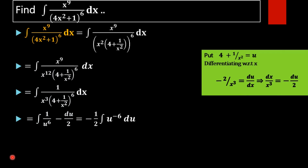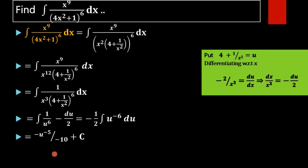On integrating, we get minus 1 by 2 into the integral of u raised to minus 6. Integrating gives u raised to (minus 6 plus 1) divided by (minus 6 plus 1), which is u raised to minus 5 divided by minus 5. So minus 5 times 2 gives minus 10, and we get minus u raised to minus 5 divided by minus 10. The two negatives cancel each other, leaving u raised to minus 5.